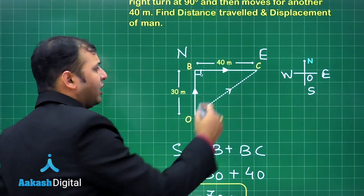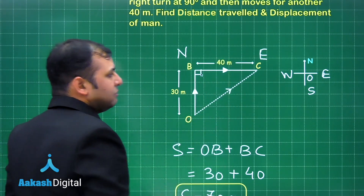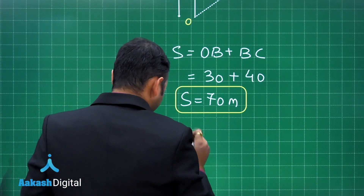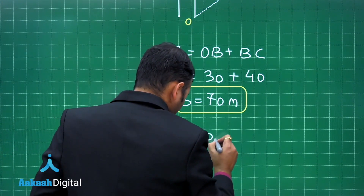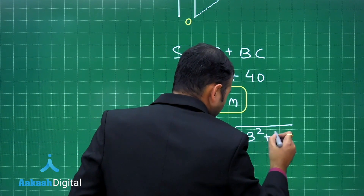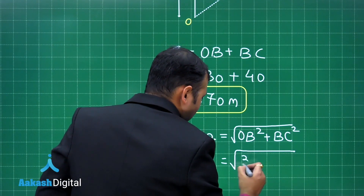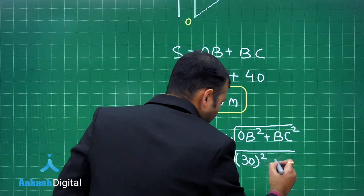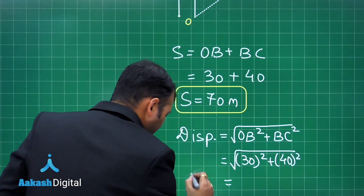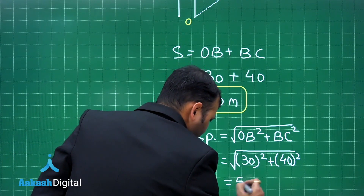Here you can see that the angle is 90 degrees as given in the question, so this follows a right-angle triangle. The displacement S equals the square root of OB² plus BC², which is √(30² + 40²), giving a displacement of 50 meters.